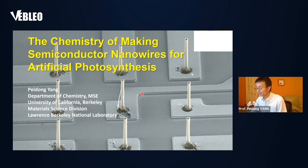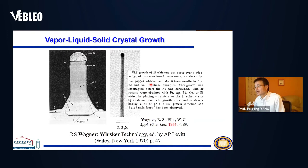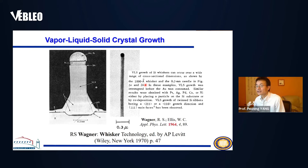To talk about semiconductor nanowires, the first thing we always think about is the original crystal growth method developed at Bell Labs by Dr. Wagner, back in the 1960s. This is called vapor-liquid-solid crystal growth, and what you are looking at here are electron microscope images of germanium nanowires, or silicon whiskers at the time.